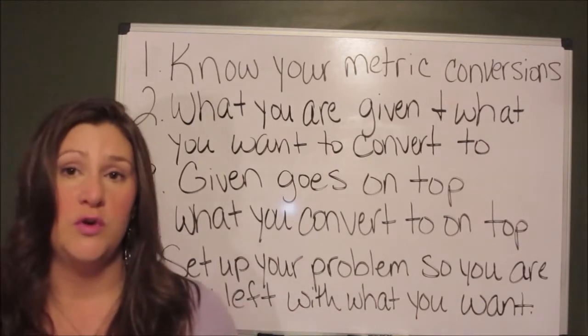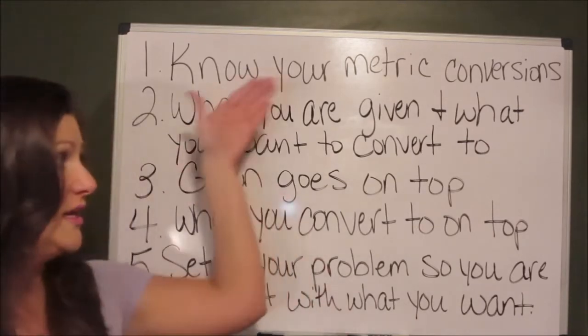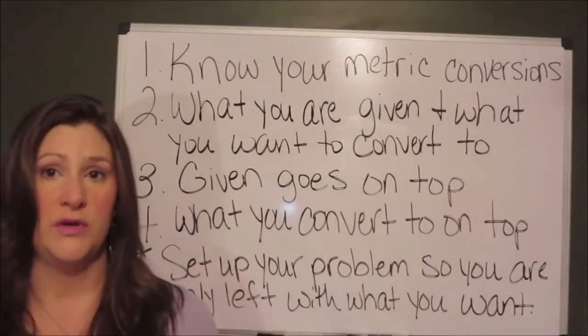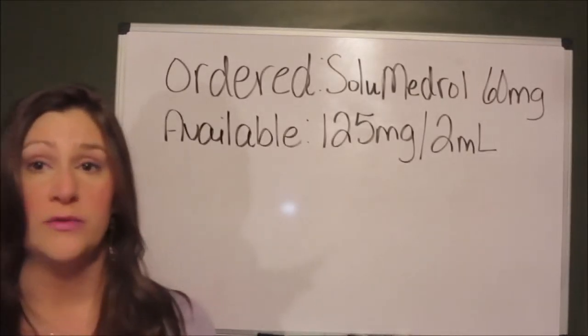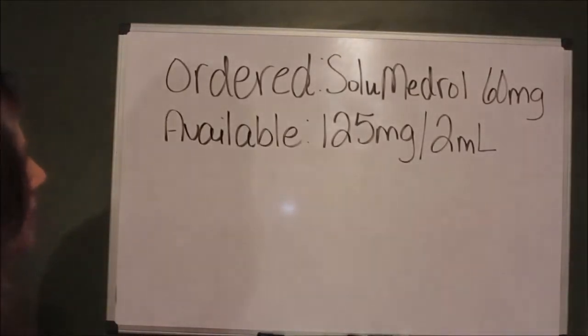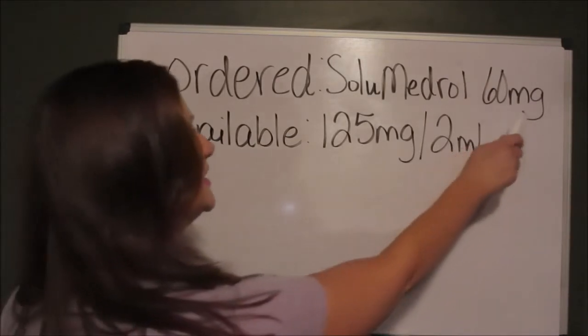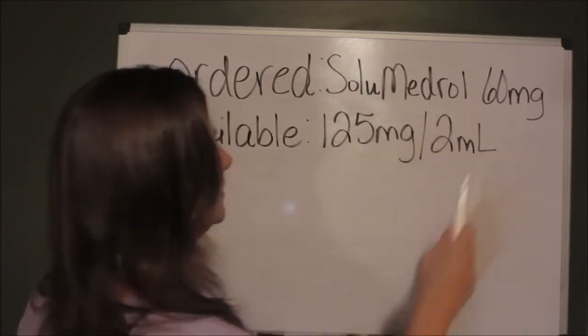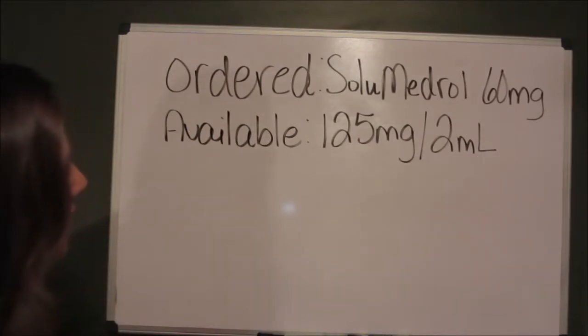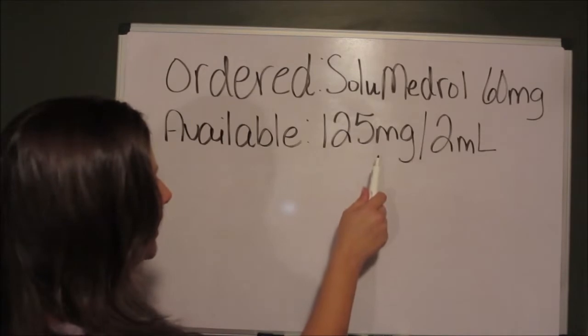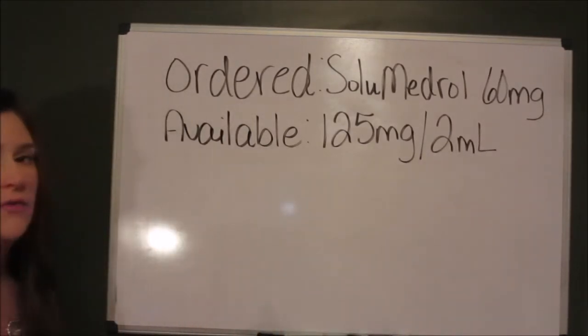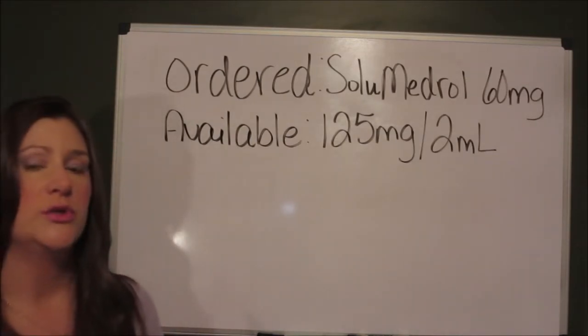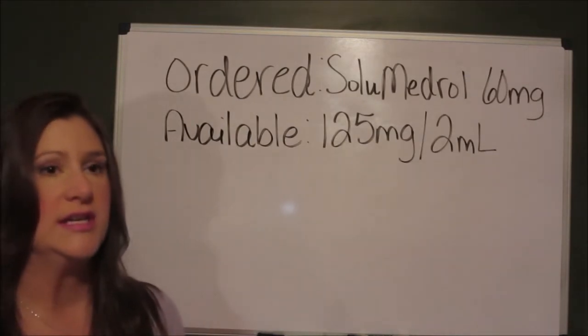Let's work a few problems together with these 5 steps so you can really get a feel for what I'm talking about. Here is our first problem: an order for 60 milligrams of solumedrol IV push. What you have available is 125 milligrams in 2 milliliters. So you are going to be looking for how many milliliters are you going to draw up into the syringe to give this patient?